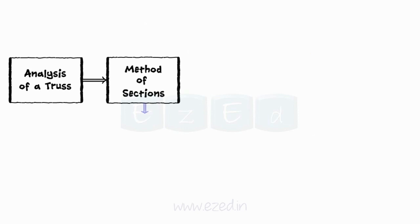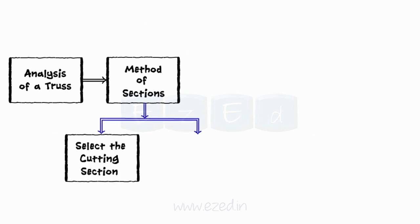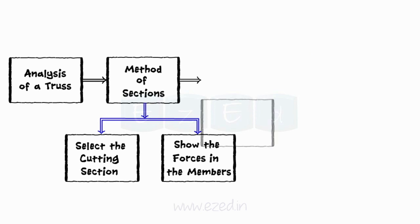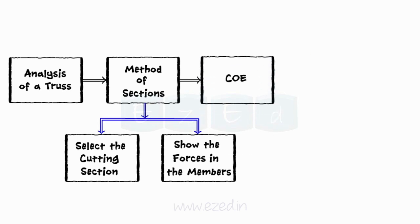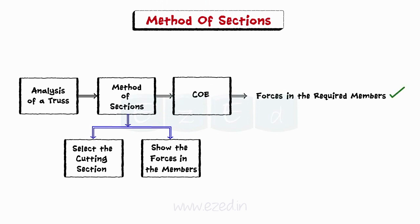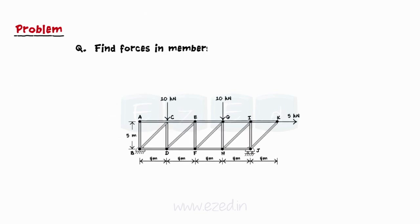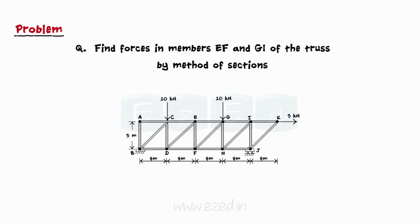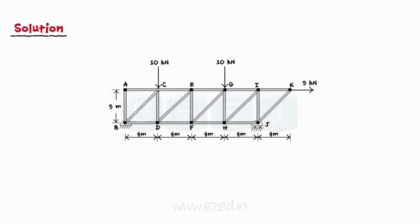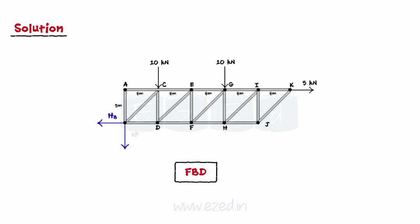The following problems will be helpful to understand the concept behind analysis of a truss by method of sections — how we select the cutting section, find the forces of the members, and apply conditions of equilibrium to any one part of the truss. Consider the truss shown. Find forces in members EF and GI of the truss by method of sections. In this example, we have to find forces in only two members.